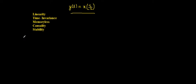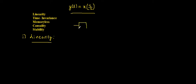We will test the given system for linearity. Any system is linear if it follows the properties of superposition and homogeneity. Before starting, let's understand the system's behavior. For input x(t) passed through operator h, the output y(t) = x(t/2). The nature of the system is that wherever it finds t, it replaces that time with t/2.